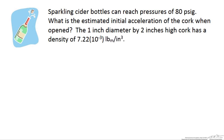We are going to use the assumption that the cork is 1 inch diameter by 2 inches high and it has a density of 7.22 times 10 to the negative third pounds mass per inch cubed.